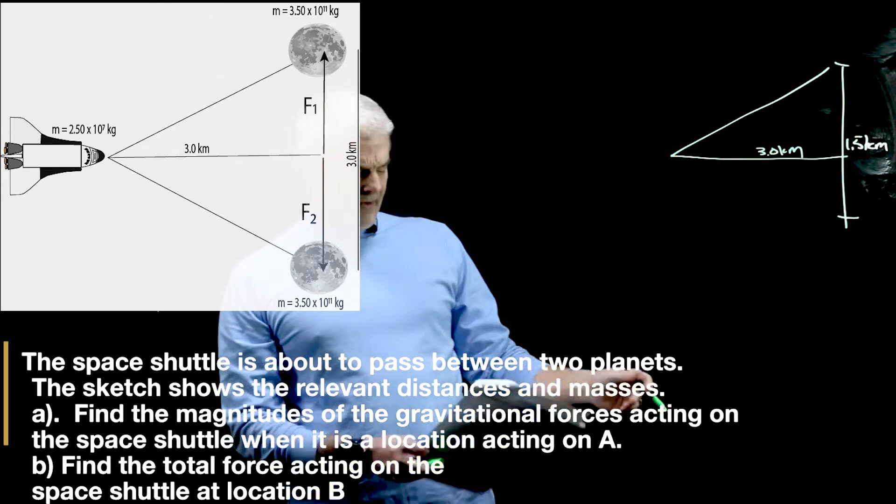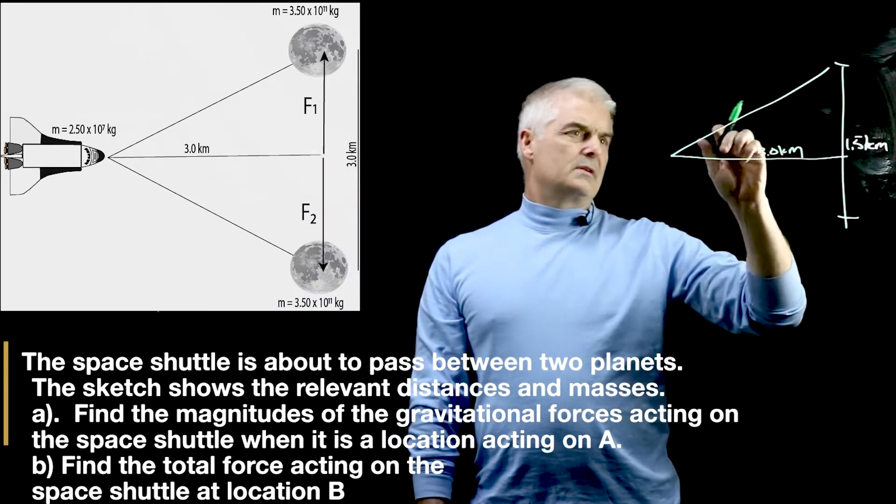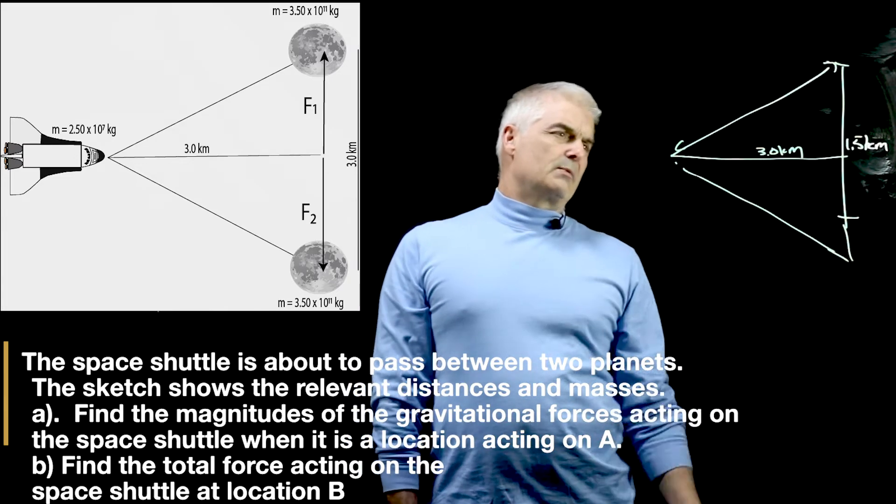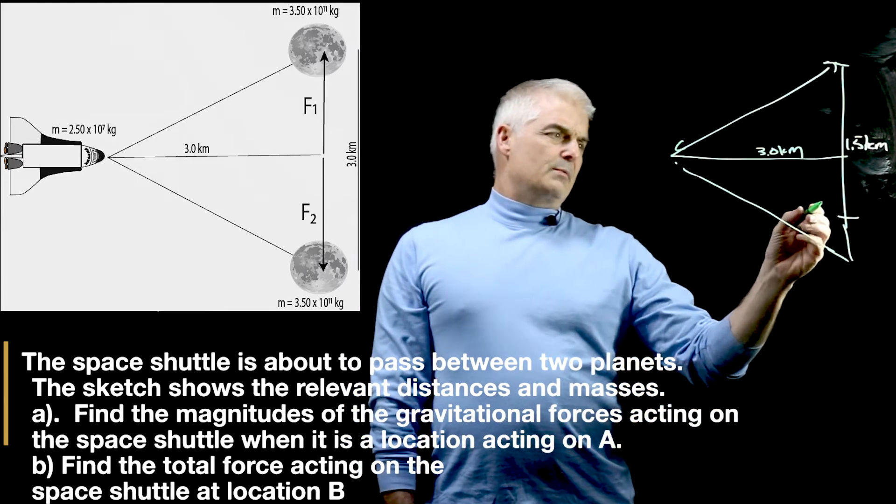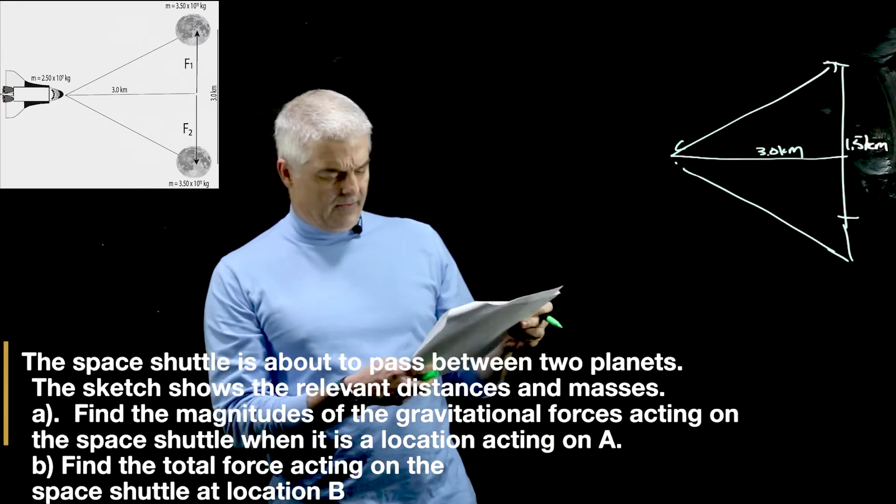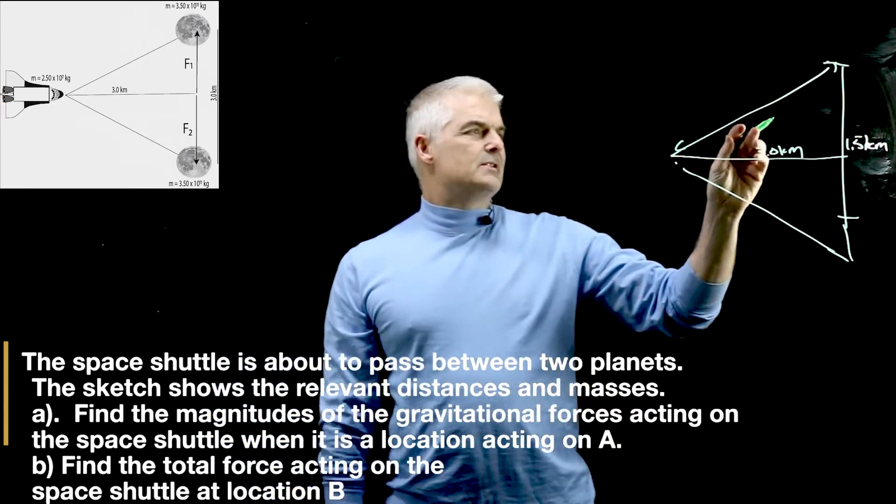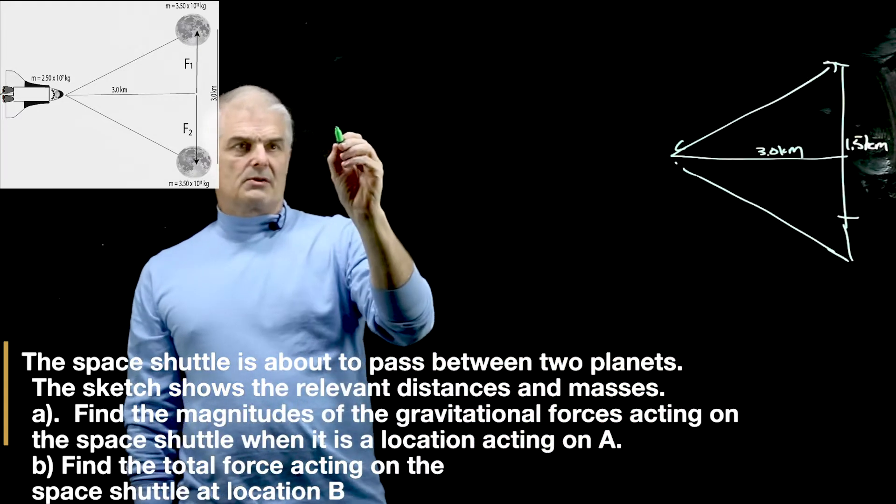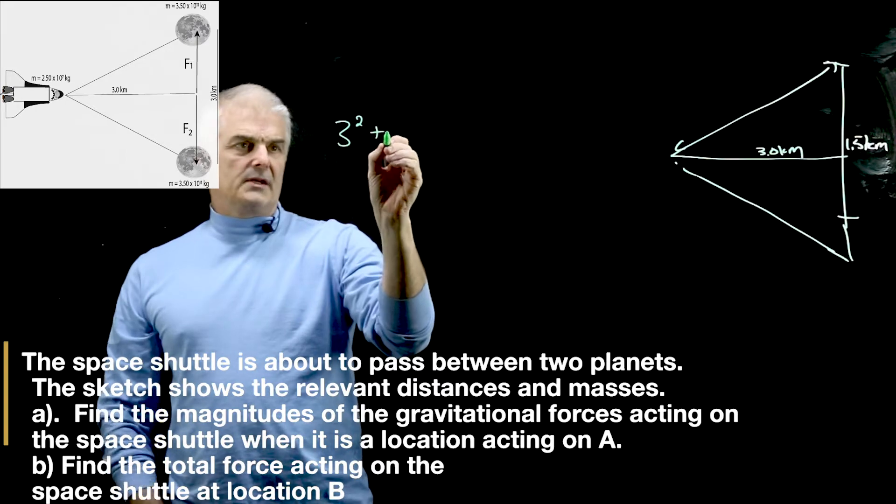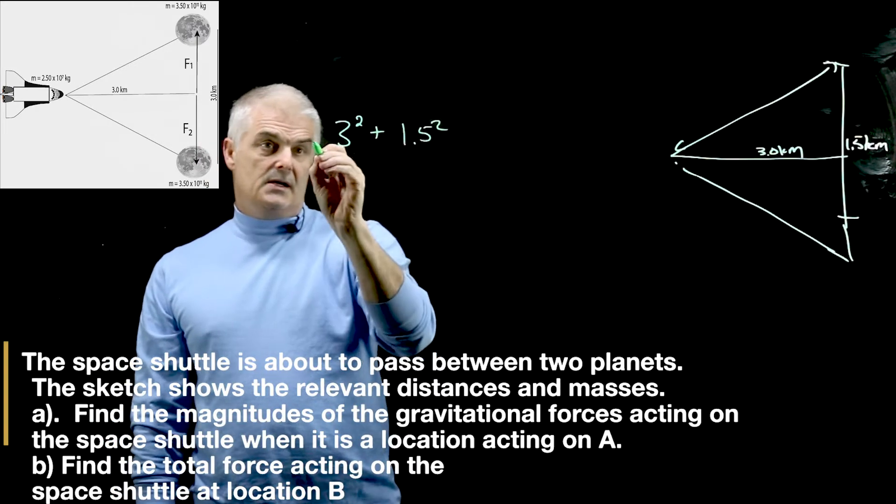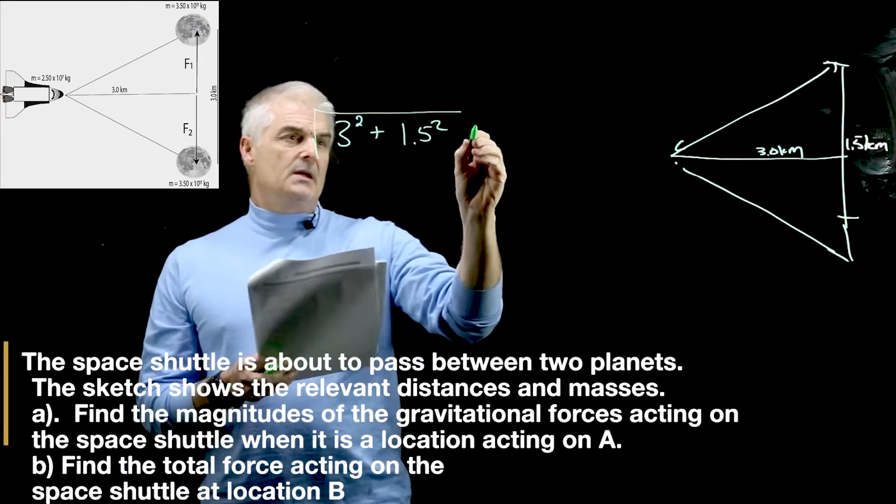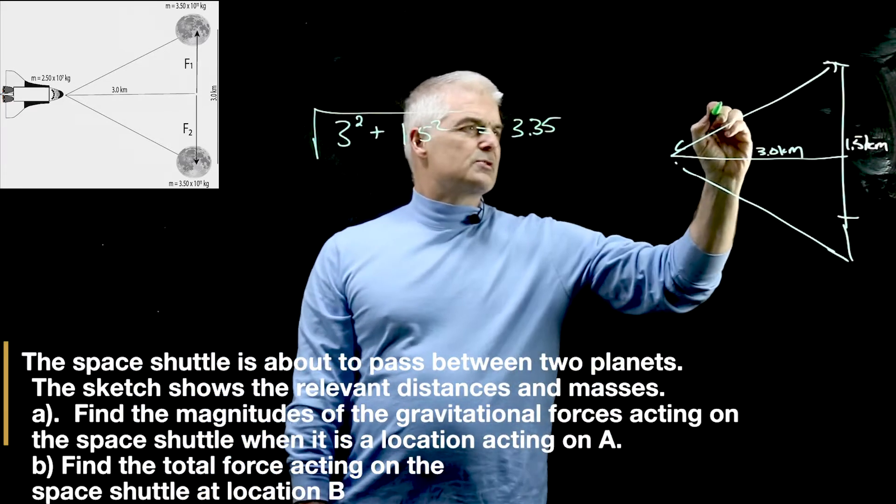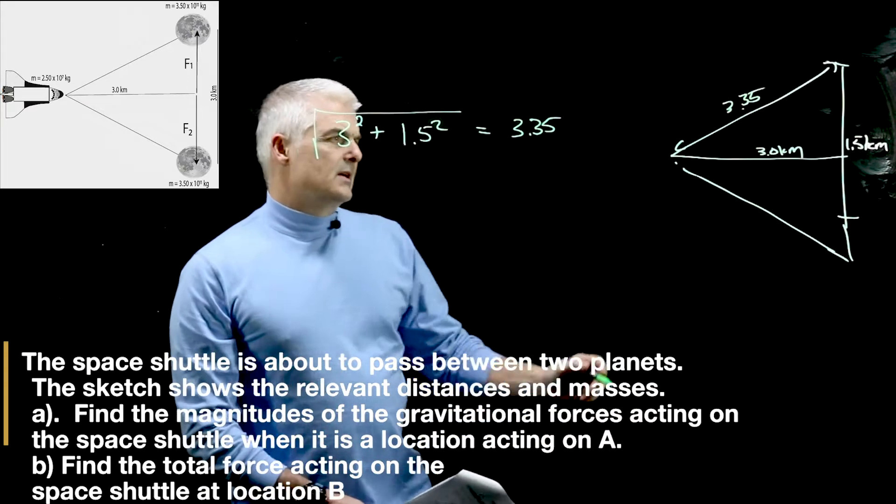What we need to figure out is what this distance is here. We'll just use Pythagorean theorem. I'm going to say three squared plus one and a half squared, square root, because that's the Pythagorean theorem. And I come out to 3.35. Get your calculator, trust me. So this number here is 3.35 kilometers.